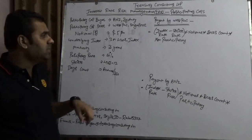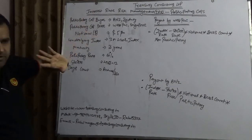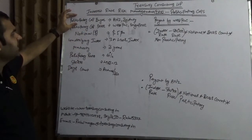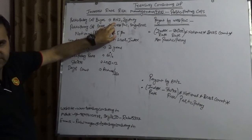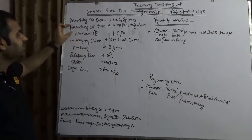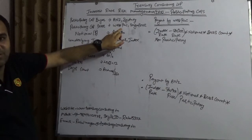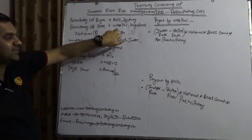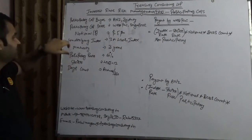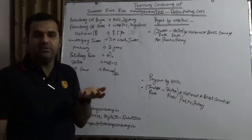Moving back to this example — we assume the participatory cap buyer is ANZ Sydney, Australia, my favorite bank and favorite place. The participatory cap seller is Westpac Singapore, again my favorite place. So both banks are my favorites — Australian banks. The notional is 5 billion dollars.